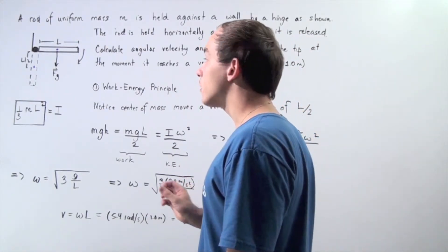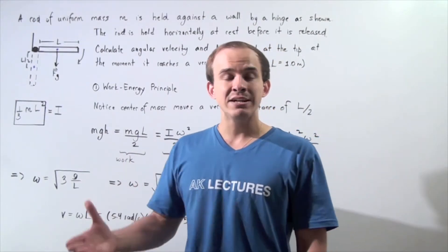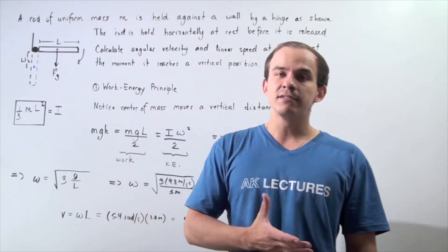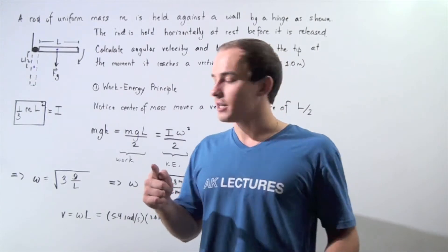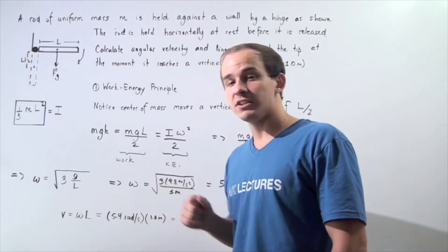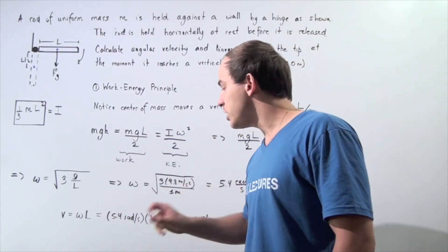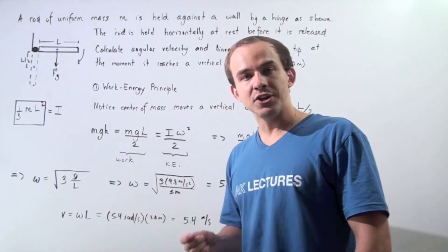To find our velocity, we have to recall that linear velocity is equal to the product of the angular velocity and our length of the rod. We simply plug in our values, the angular velocity is 5.4 radians per second, and L is 1 meter.